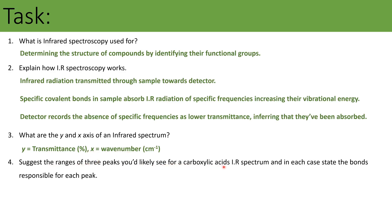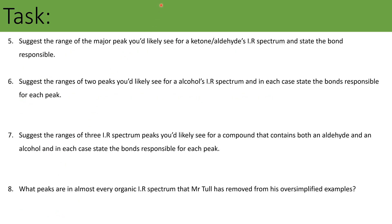Suggest the ranges of three peaks you'd expect to see for a carboxylic acid's infrared spectrum: the O–H of an acid between 2,500 and 3,000; the carbonyl C=O between 1,680 and 1,750; and a C–O between 1,000 and 1,300 — though that one is right in the fingerprint region. For a ketone or aldehyde, you'd get a carbonyl C=O between 1,680 and 1,750 — always write the bond down. For an alcohol, the O–H appears between 3,250 and 3,550 because it's in an alcohol environment, not a carboxylic acid environment, plus a C–O at 1,000 to 1,300.